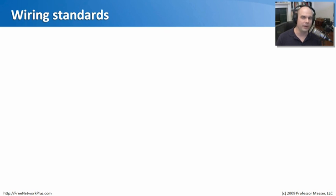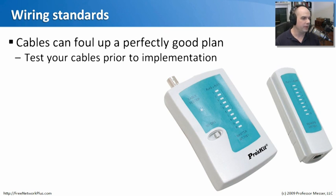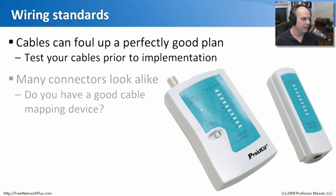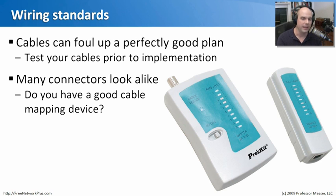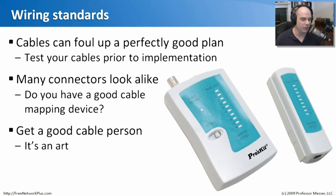Let's start by discussing wiring standards and where this came from. Whenever you put up the cables and plug everything in, you can really have nothing happening on your network because the cabling was not done properly to begin with. You generally want to test your cables a lot prior to implementation. The connectors on our cables look very similar whether it's a loopback, rollover, ethernet straight-through, or crossover. The only difference is how it's wired inside the jacket, so it's very useful to have a cable mapping device that shows which connections are made to what ports.